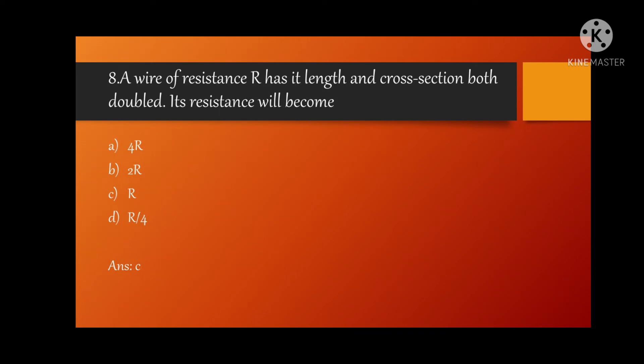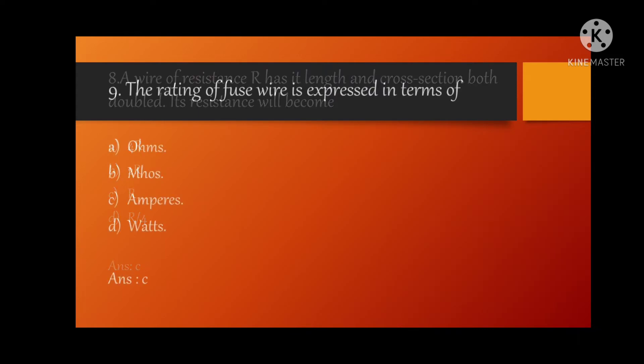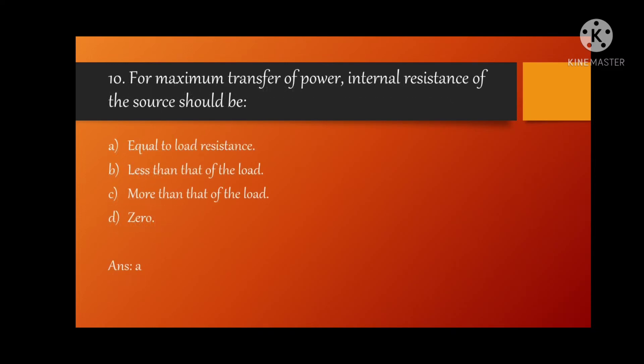MCQ eight: a wire of resistance R has its length and cross section both doubled, its resistance will become? Option C, R. Ninth MCQ: the rating of fuse wire is expressed in terms of? Option C, amperes.